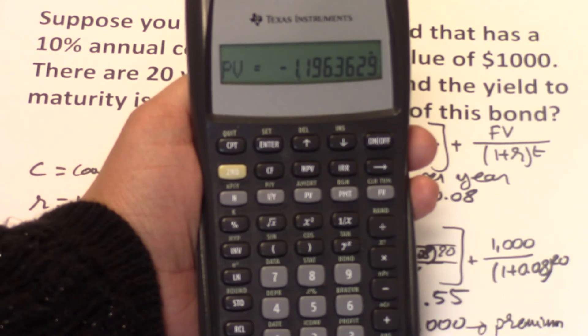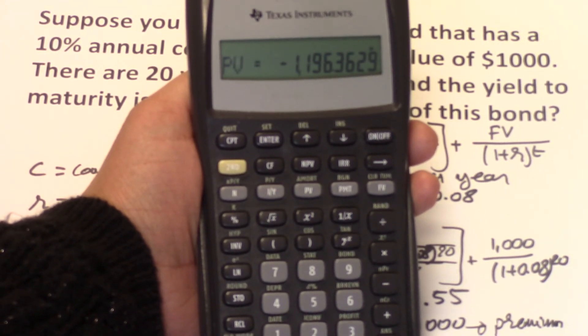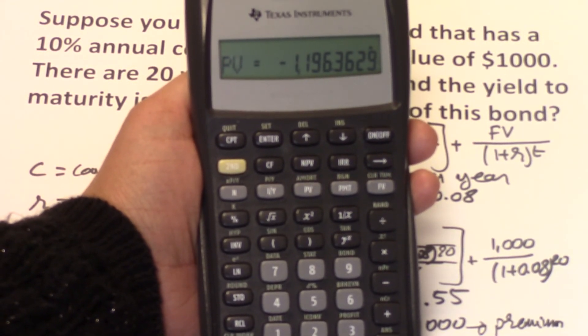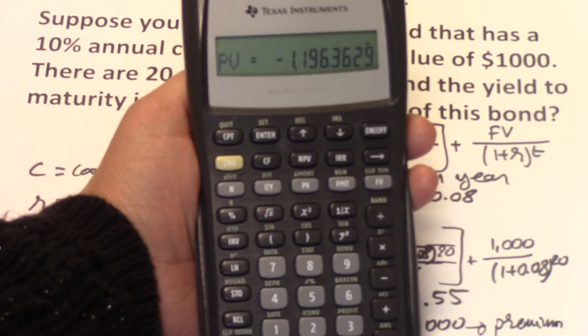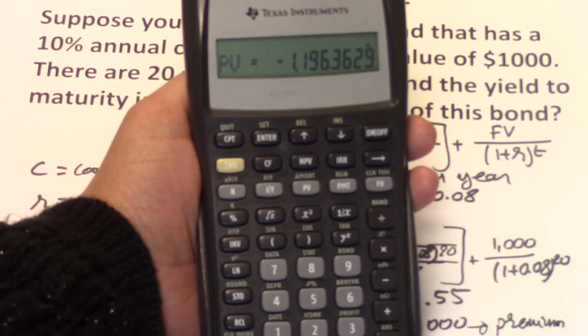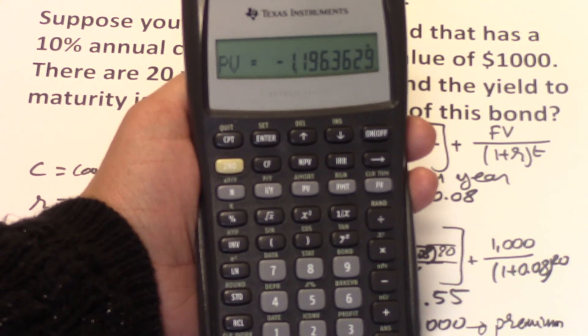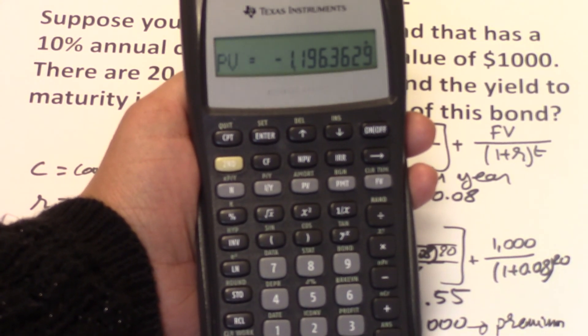This means that if you were to buy this bond, you need to spend $1,196.36 to be able to generate a coupon payment every year for $100 and get the future value of $1,000 at the end.